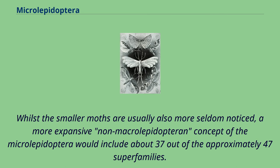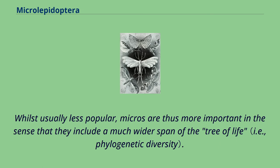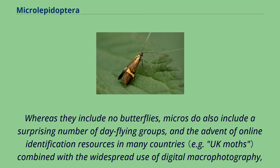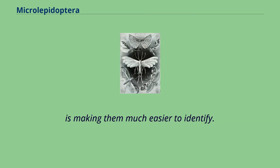Whilst the smaller moths are usually also more seldom noticed, a more expansive non-macrolepidoptera concept of the microlepidoptera would include about 37 out of the approximately 47 superfamilies. Whilst usually less popular, micros are thus more important in the sense that they include a much wider span of the tree of life. Whereas they include no butterflies, micros do also include a surprising number of day-flying groups, and the advent of online identification resources combined with widespread use of digital macrophotography is making them much easier to identify.